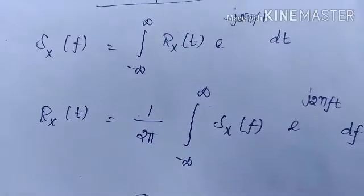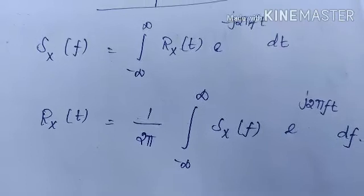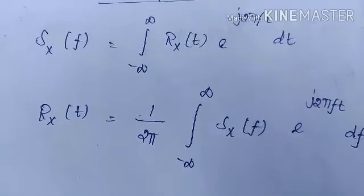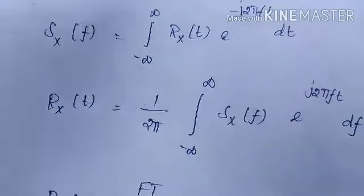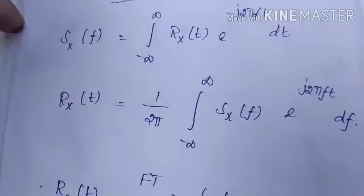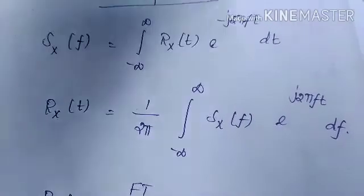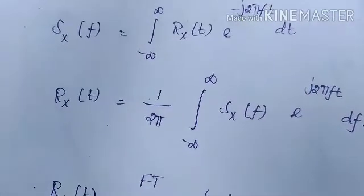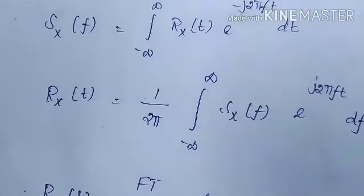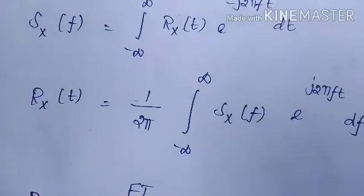Listen to the formulas clearly and note them down — these are very important. If we are given the autocorrelation function, then by simply applying the Fourier transform we can easily calculate the power spectral density. The Fourier transform formula is: integral from minus infinity to infinity of x(t) e to the power minus j2πft dt.